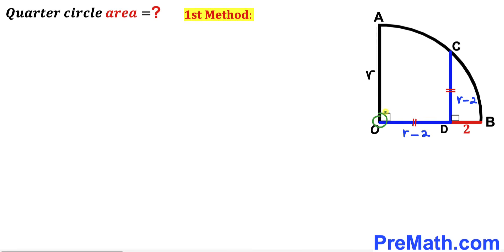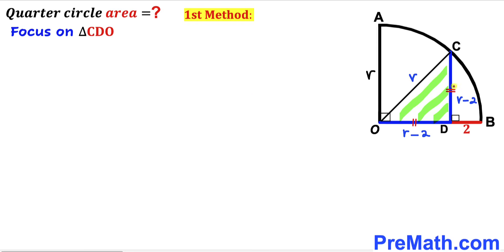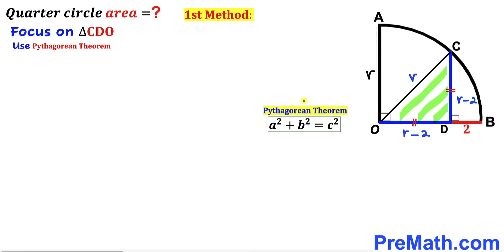I'm going to connect center O with vertex C, and now OC is the radius of this quarter circle, so I'll label this radius as lowercase r as well. Now let's focus on right triangle CDO and apply the Pythagorean theorem: A squared plus B squared equals C squared. In our case, the hypotenuse is lowercase r, whereas the two other legs are r minus two and r minus two.